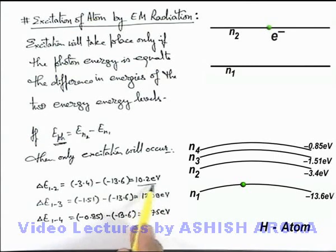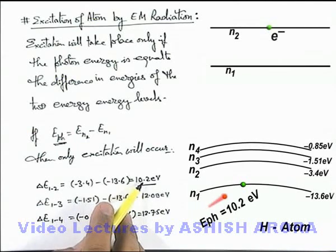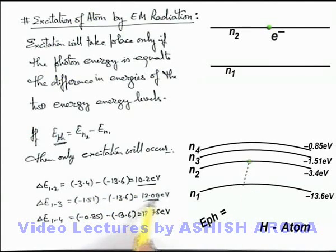That means 10.2 is the difference between the energy level 1 and 2. If this much amount of energy is supplied, electron will go to n equal to 2 state. This is the difference between 1 and 3. If this much energy photon is supplied, electron will transit to n equal to 3 state. And the difference of 1 to 4 is 12.75 electron volts. If this photon is supplied, electron will transit to n equal to 4 state.